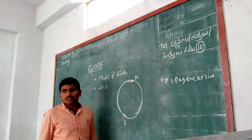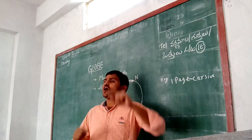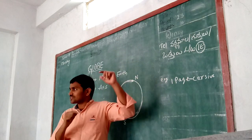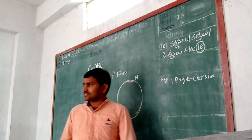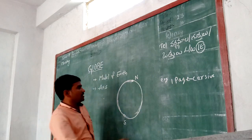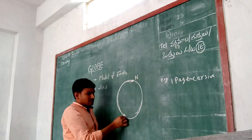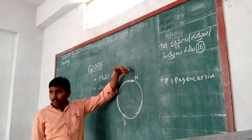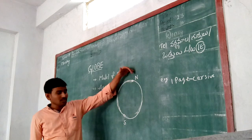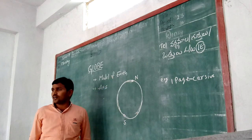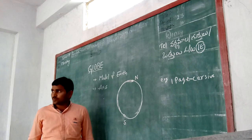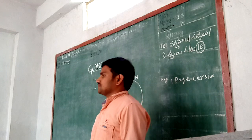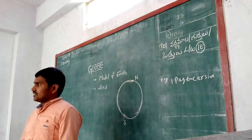What are the poles? The poles are the two opposite end points of the earth. See here — this is the north pole, this is the south pole. The top of the globe is called the north pole. The bottom of the globe is called the south pole. Both are the two opposite end points of the earth.